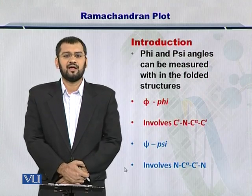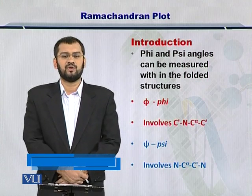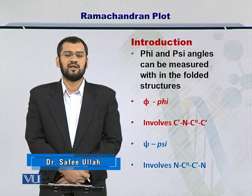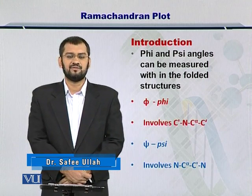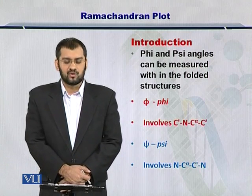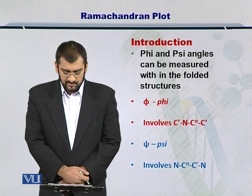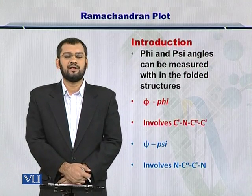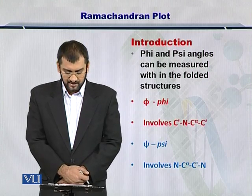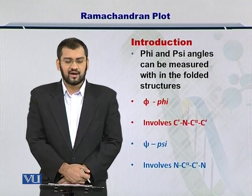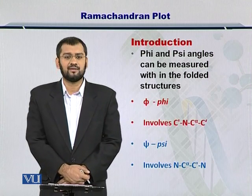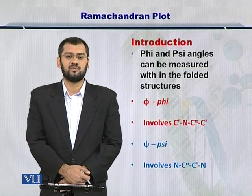Phi and Psi are the angles that form between the alpha carbon and the peptide bond planes surrounding the alpha carbon. Phi involves the angle between beta carbons, where the nitrogen and alpha carbon are considered to be the singular atom. Psi, on the other hand, is the angle between two nitrogen atoms, while the alpha and the beta carbon are considered to be overlapped.